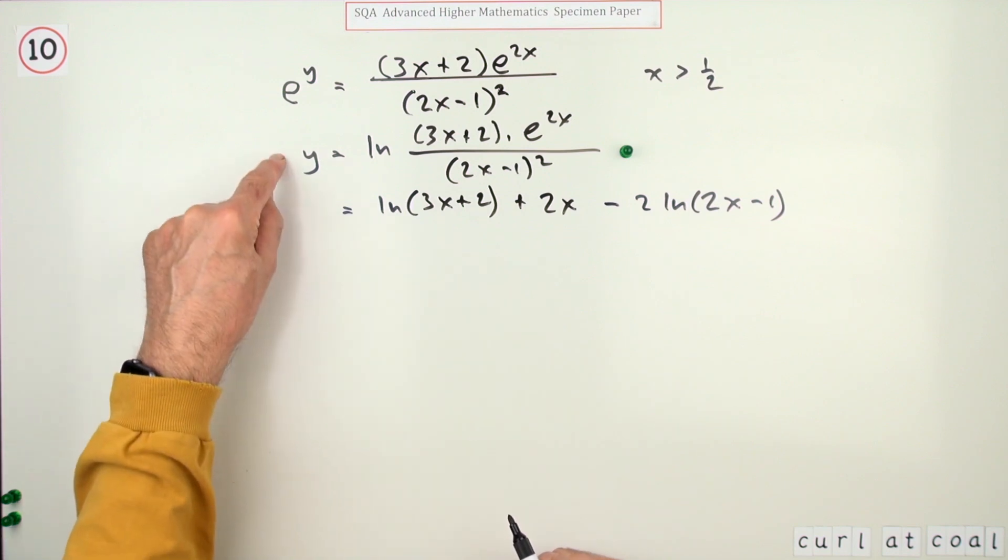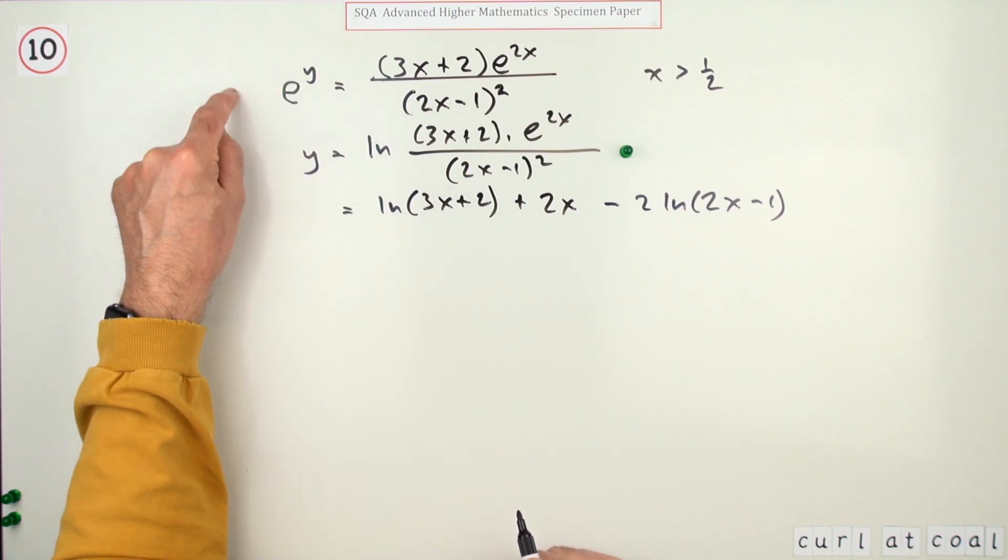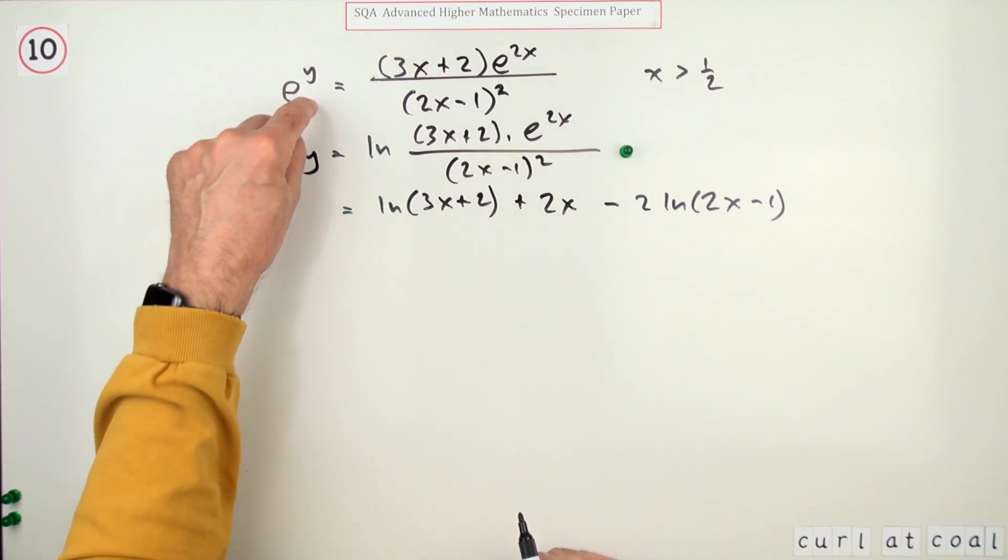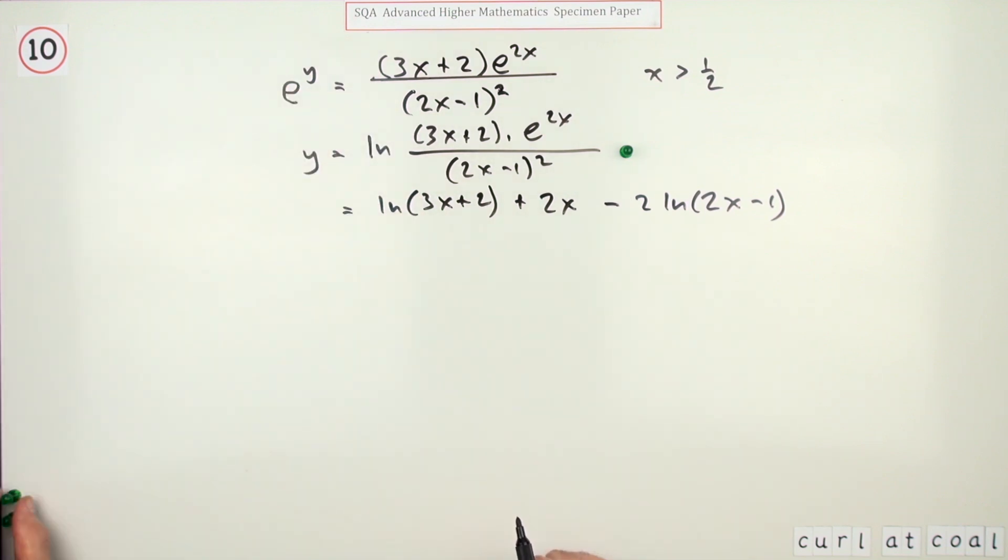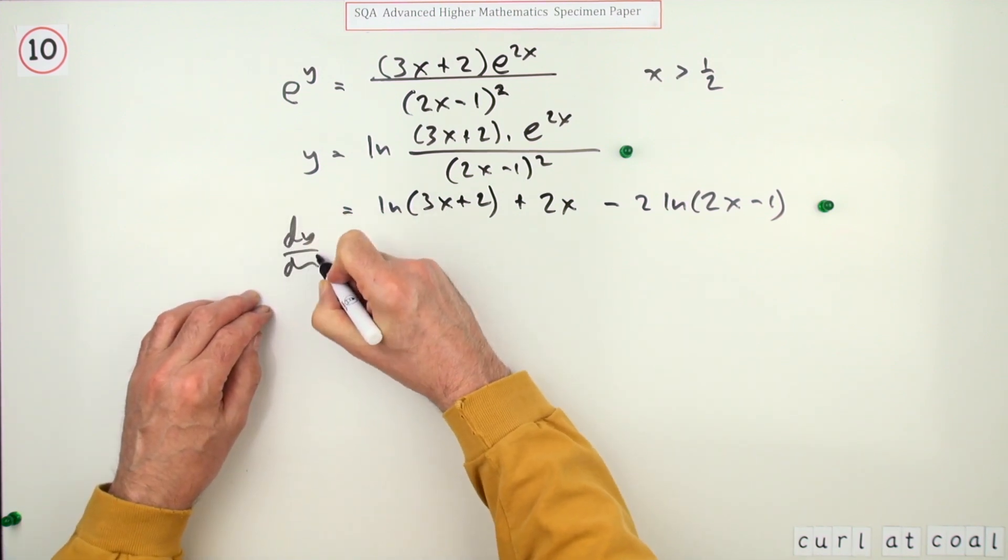There's one just for rewriting this in log form whether you actually went to the trouble of saying I'll take the log of this side and the log of that side which you didn't need to because there was a log tucked in here already and there's one mark for expanding it out. Now you can just differentiate it term by term.